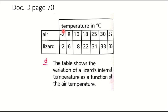As you can see, the external temperature is always increasing, and the internal temperature of the lizard is also always increasing. While analyzing this table we should mention only the first and last points. So we will say: as the external temperature increases from minus 2 degrees Celsius to 32 degrees Celsius, the lizard's internal temperature increases from minus 2 degrees Celsius to 33 degrees Celsius. Now, what can we conclude from this analysis?